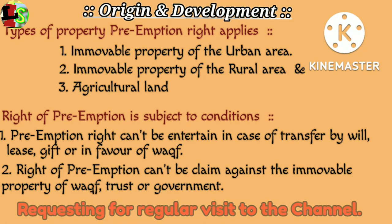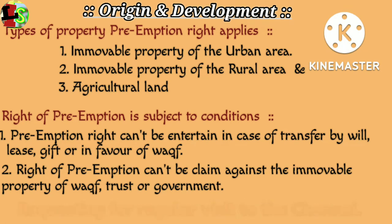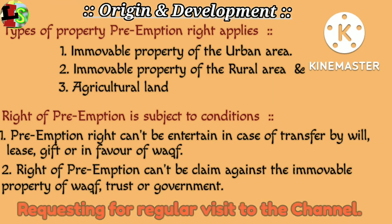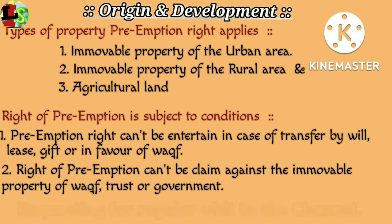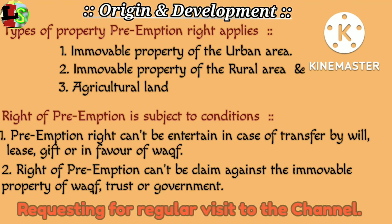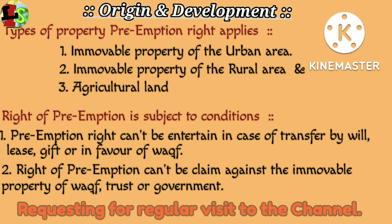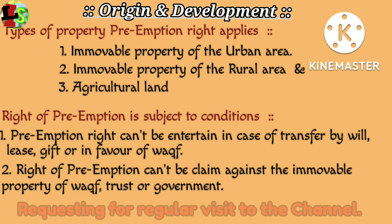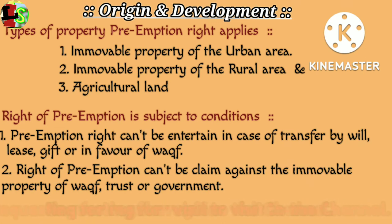But the right of preemption over the above three types of properties is also subject to conditions. One, the preemption right cannot be entertained if the property is transferred by way of gift, lease, will, or in favor of a wakf. Two, the right of preemption cannot be claimed against immovable property owned by a wakf, trust, or the government.